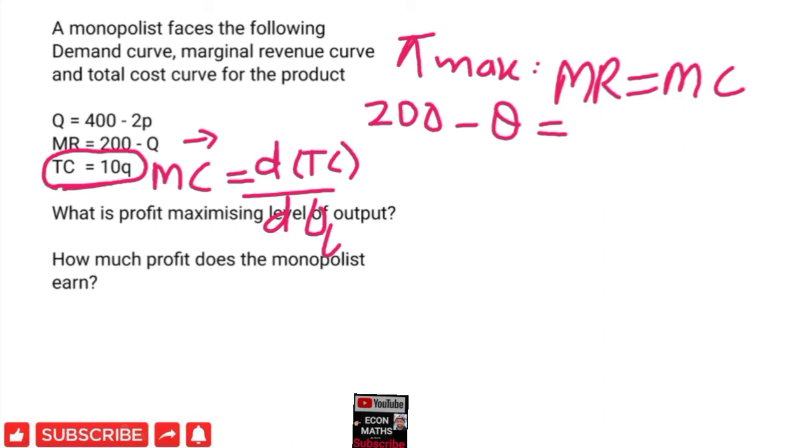So our marginal cost is 10. We equate these two: 200 - Q = 10. When solving this we get Q = 190. This is the profit maximizing level of output.